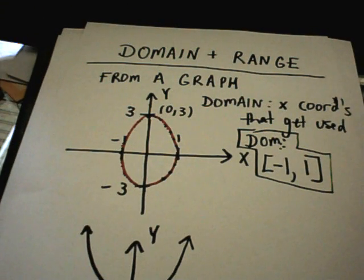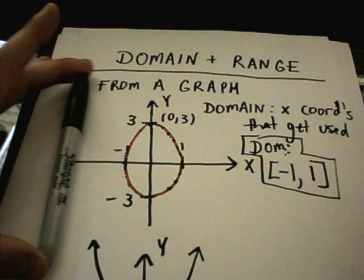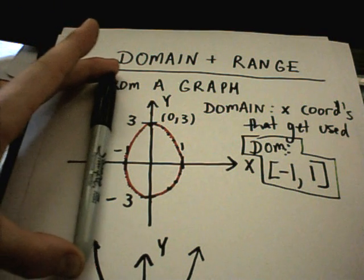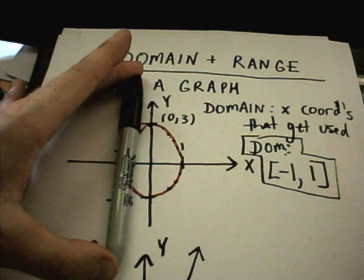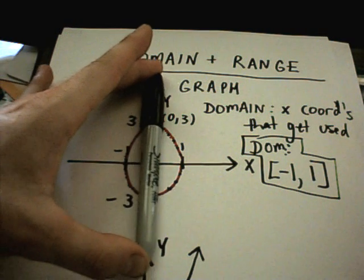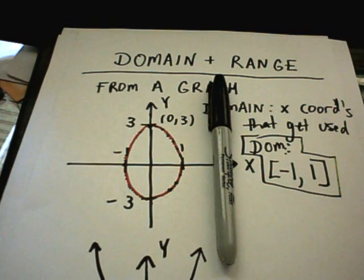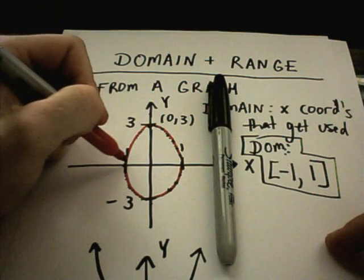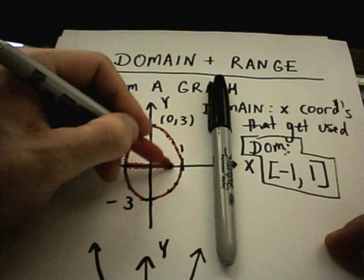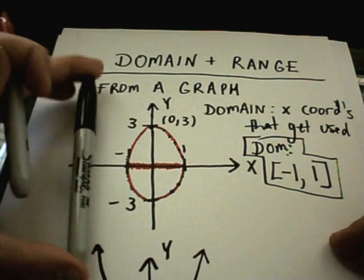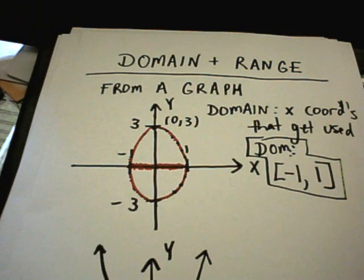Another way I always thought about it: to find the domain, I would move my pen up and down and think, am I getting x-coordinates yet? Not yet, not yet — am I hitting the graph yet? Not yet. Then I finally hit it, still hitting it, until I get to positive 1 and then I'm no longer hitting it. If you shade in all those places on the x-axis, you get x-coordinates between negative 1 and positive 1.